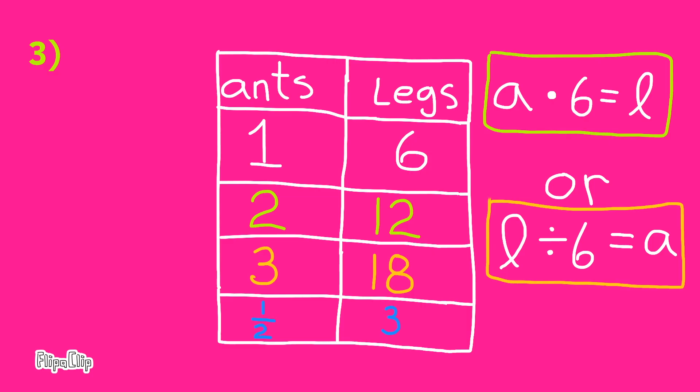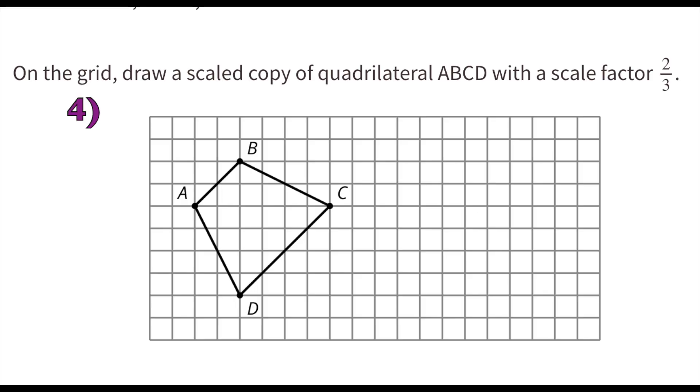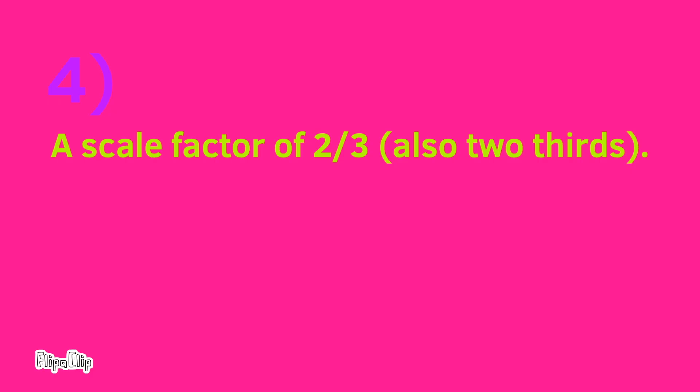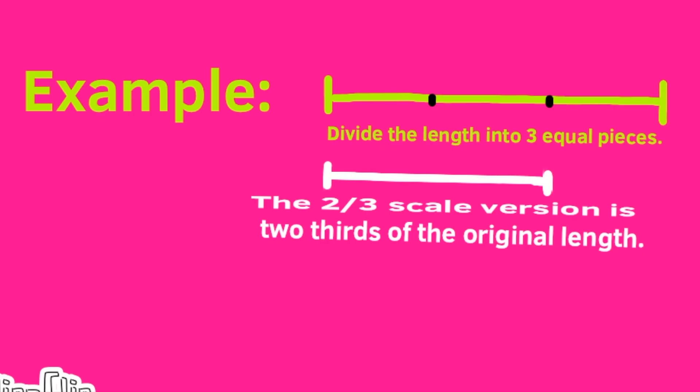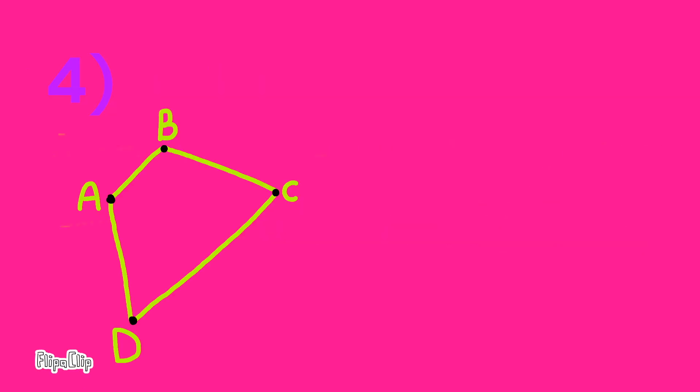Number 4: On the grid, draw a scaled copy of quadrilateral ABCD with a scale factor of 2/3. Here's an example of a scale factor of 2/3. I'm dividing this line segment into 3 equal pieces. The 2/3 scale version is 2/3 of the original length. When you draw the scaled version of quadrilateral ABCD, draw each side length 2/3 the length of the original.